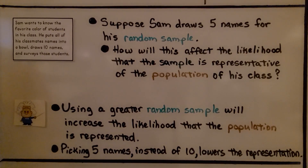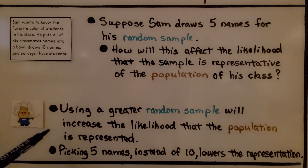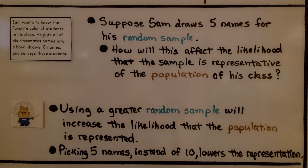In the last example, Sam wanted to know the favorite color of students in his class, so he put their names into a bowl and picked 10 names. Suppose Sam draws only five names instead. How will this affect the likelihood that the sample is representative of his class? Using a greater random sample increases the likelihood that the population is represented. It was better when he had ten names instead of five. Picking five instead of ten lowers the representation. The more names he picks, the better — a greater random sample increases the likelihood that the population is represented.